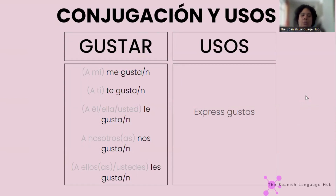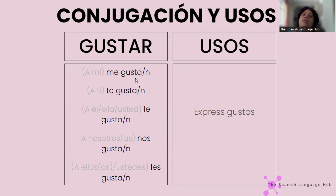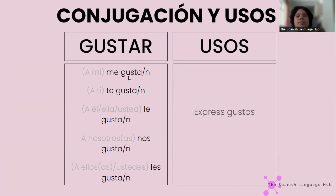Gustar is conjugated differently from the other verbs we have seen. Instead of yo, tú, él, ella, usted, nosotros, ellos, we use me, te, le, nos, les. Gusta is conjugated depending on whether the word is singular or plural — meaning the thing that you like — because gustar means to like, by the way, to express your likes.